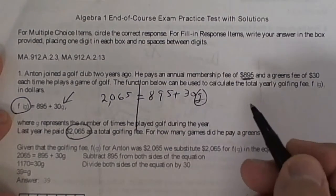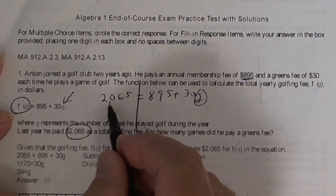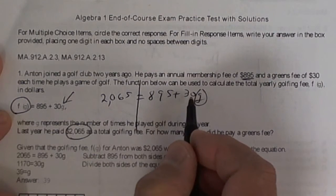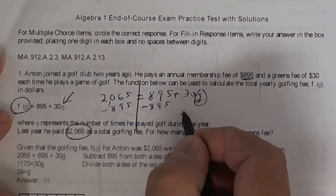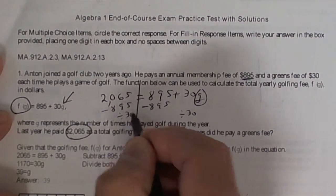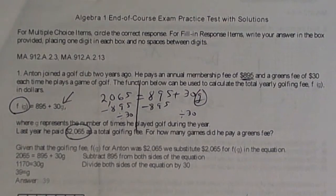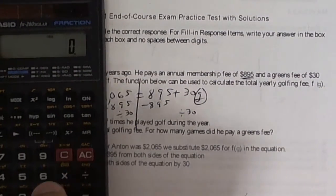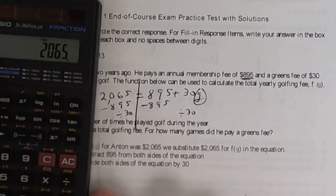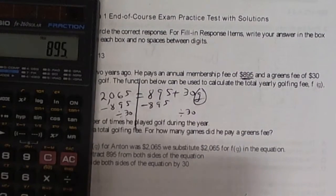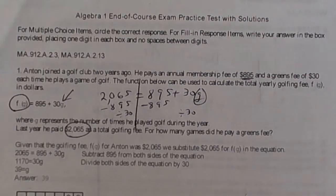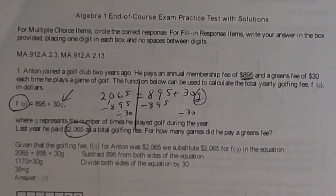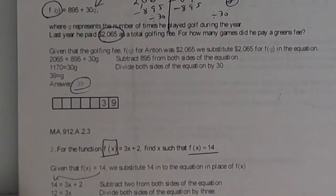Draw your line, circle the g. You want to subtract 895 from both sides and divide by 30. So minus 895, minus 895, and then you want to divide by 30. So you take your calculator and you press 2065 minus 895, press equals and then divide by 30. Thirty-nine games, and here's the answer right here.